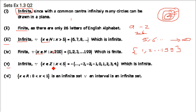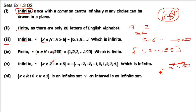Next one is x belongs to Z — Z indicates integers — and x is less than 5. Starting below 5: 4, 3, 2, 1, 0, −1, and this side is open-ended, meaning it can go up to negative infinity. So this is an infinite set.